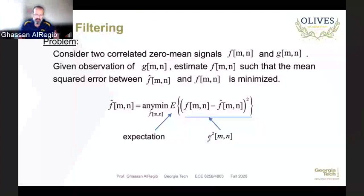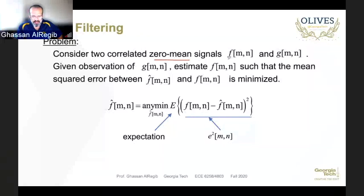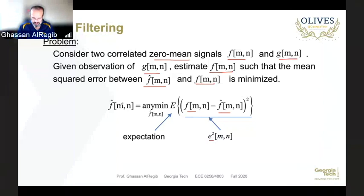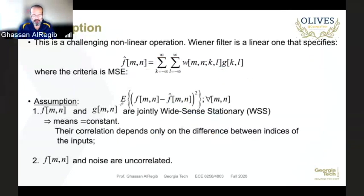To put this into a more formal problem statement: we have two correlated zero-mean signals as an assumption. f(m,n) is the original image and g(m,n) is our observation image. Given the observation of g(m,n), our goal is to estimate f(m,n) such that the mean squared error between our estimate f-hat and f is minimized — the expected value of (f minus f-hat) squared.